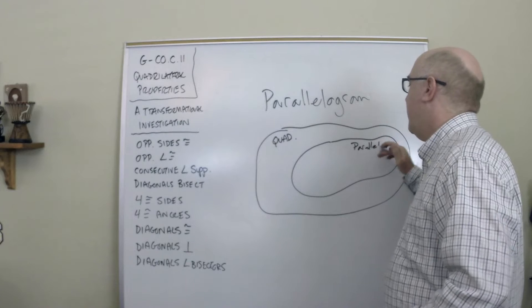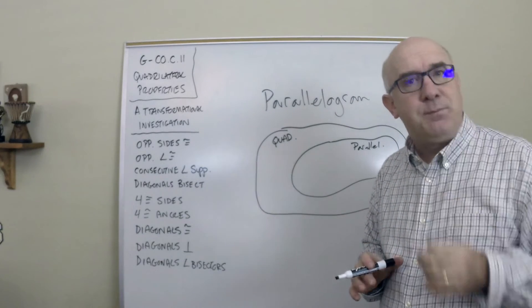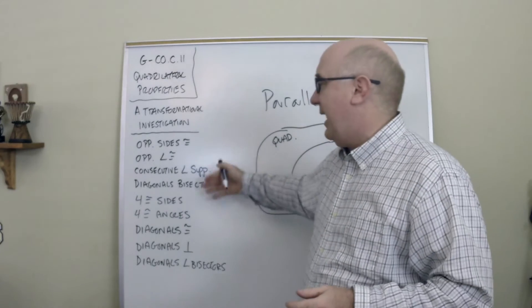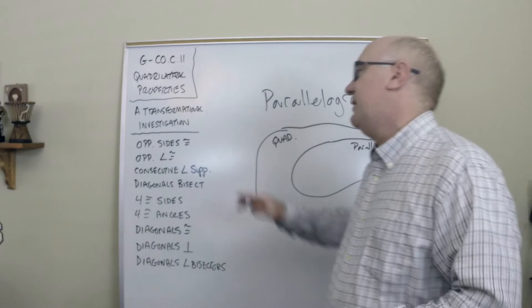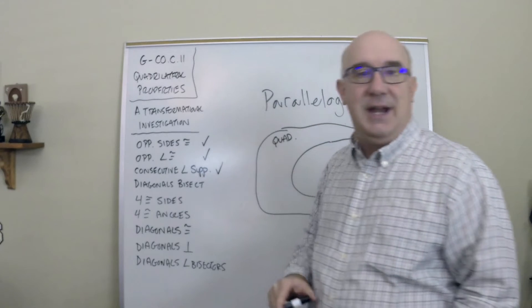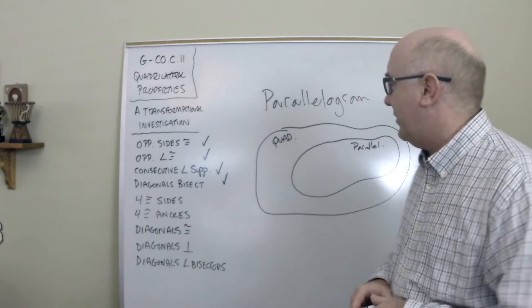This group has certain properties and relationships. You will have investigated that it has some of those properties, for instance: opposite sides are equal, opposite angles are equal, consecutive angles add to 180, and diagonals bisect each other.